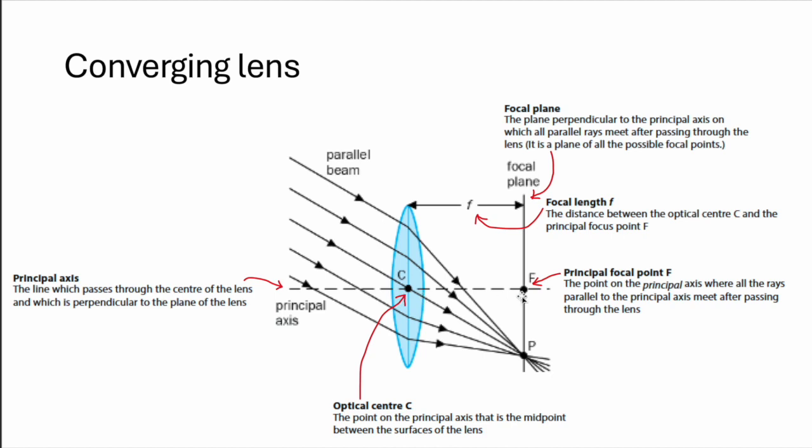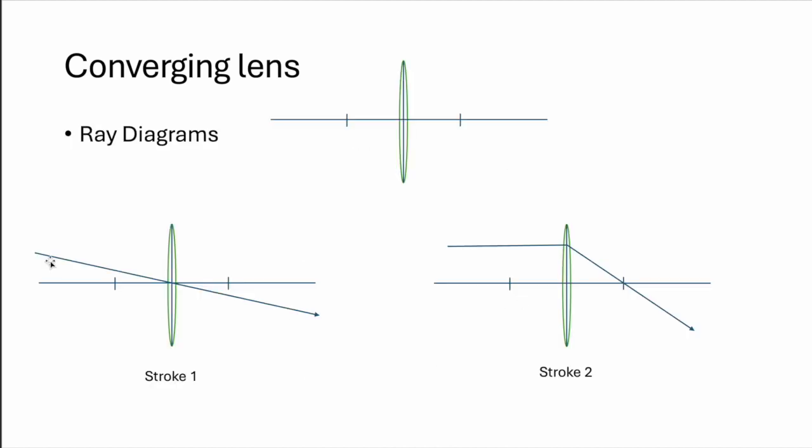And next we'll be drawing ray diagrams. This will be the fun part. So always remember draw the straight line one first from the object to through the center. That's number one. Then number two, you draw the horizontal one from the top to the lens and downwards via the focal point.